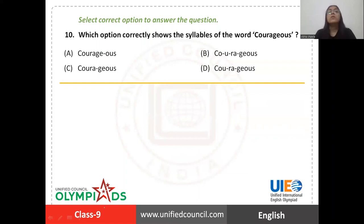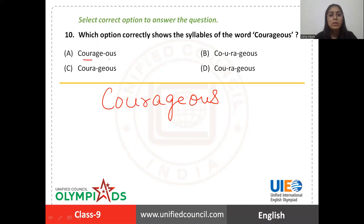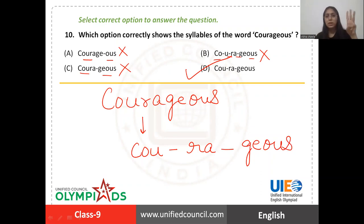Now let's come to question number ten: you have to identify the correct syllable division of the word 'courageous', which means brave. This word has three syllables. The options with two or four syllables are incorrect. The correct answer, with three syllables, is option D.